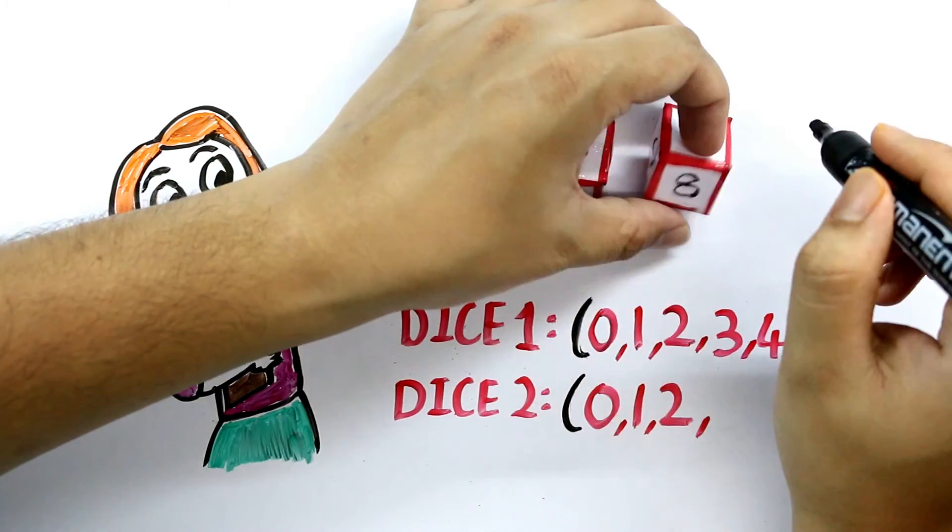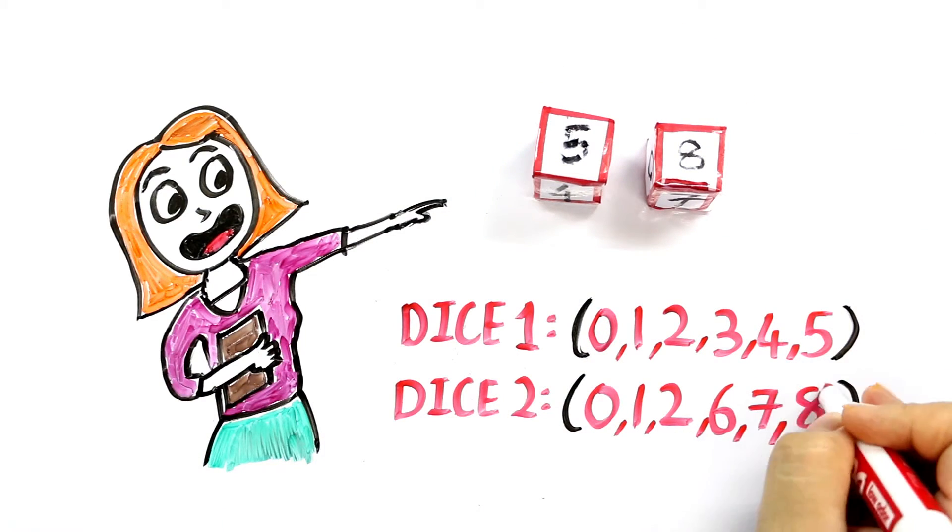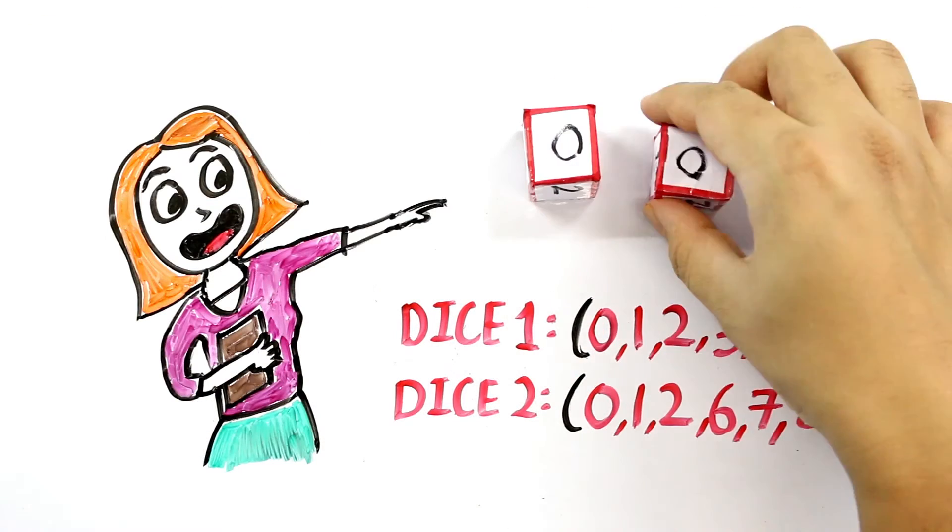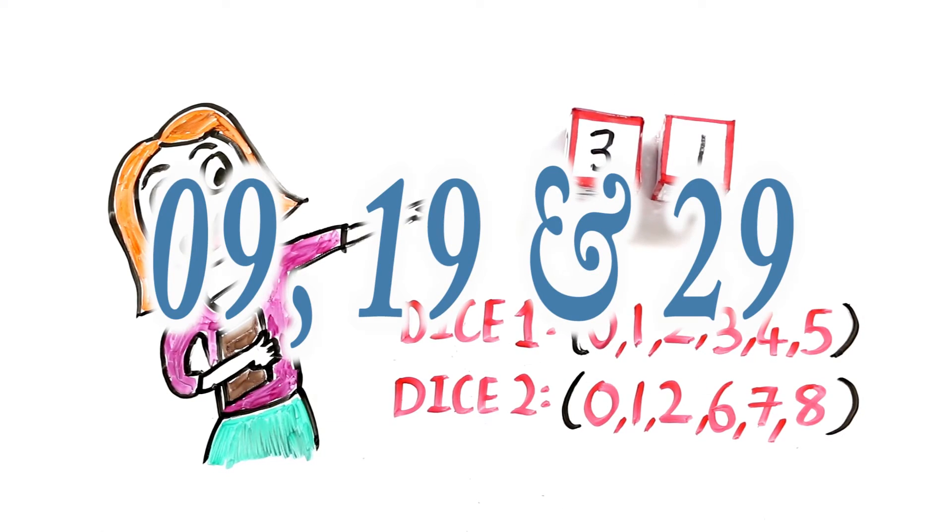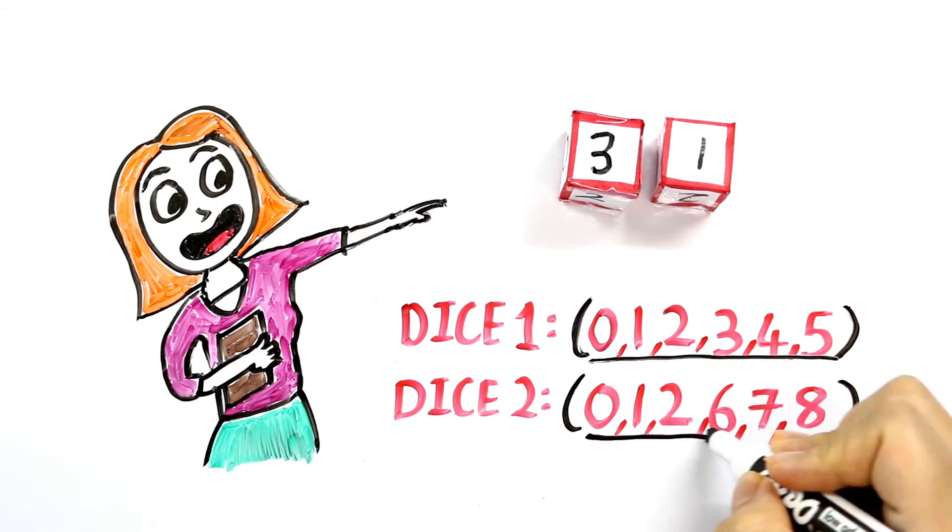and on the second dice we just have 3 places left so we can write 6, 7 and 8 here. Now, we can show any date from 01 to 31 except dates like 9, 19 and 29 since we have not written 9 on any dice.